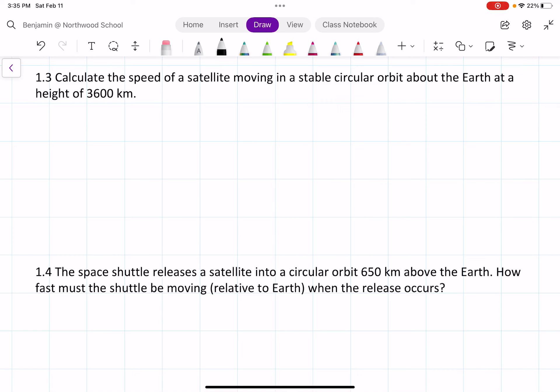For this problem, we're going to calculate the speed of a satellite moving in a stable circular orbit about the Earth at a height of 3,600 kilometers.